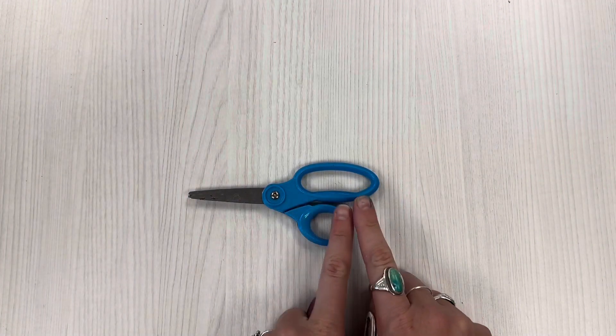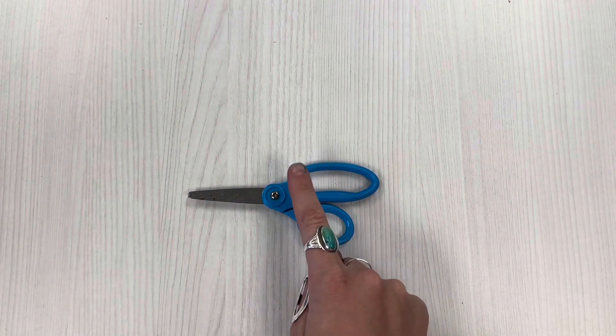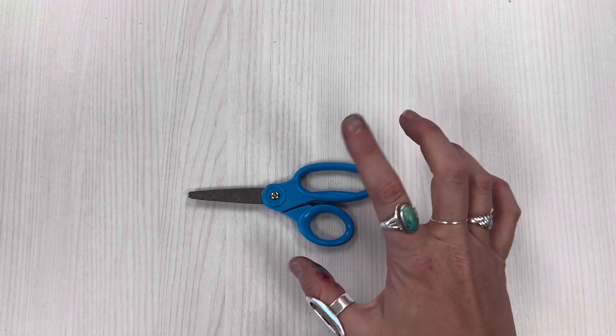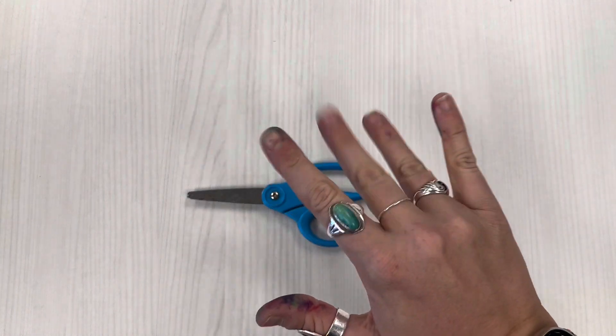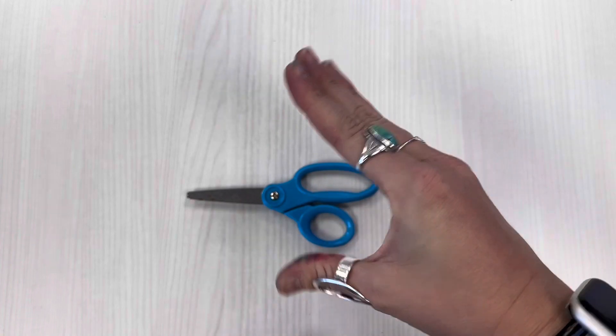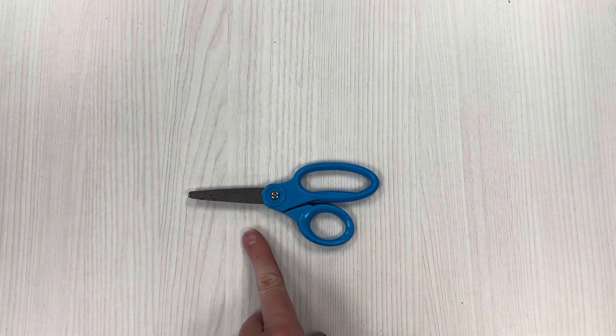On our pair of scissors we see a circle and an oval. That is for our thumb and the rest of our fingers so that we can open and close like this with the blade of the scissors.